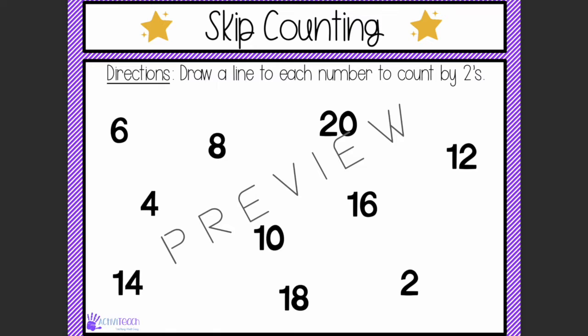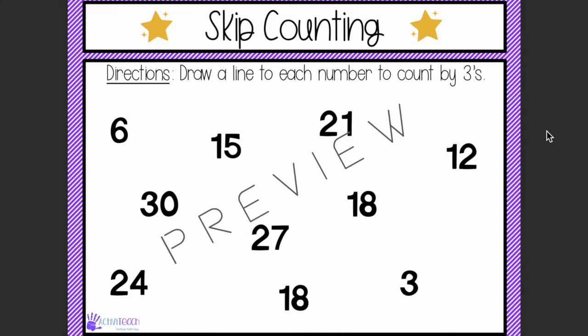The third activity I like to do with my students is a packet, but I like to put it on my smart board to have students come up and solve the problems — it's a fun way to keep students engaged. For this activity, they will draw a line to each number to count by twos, so on the smart board students will use the pen tool and draw a line from two, four, six, eight, and so on.